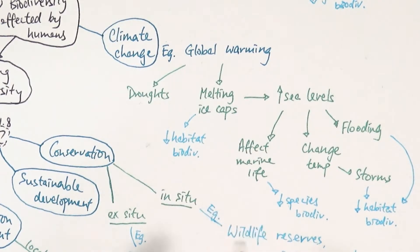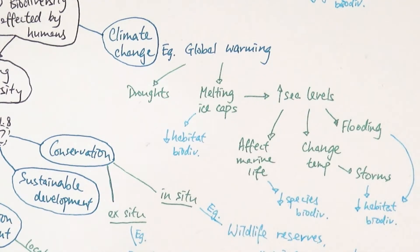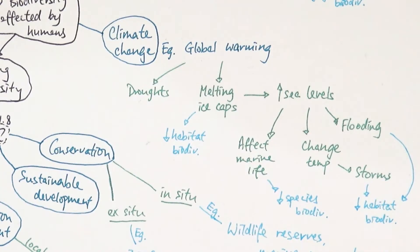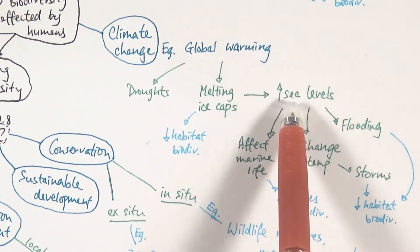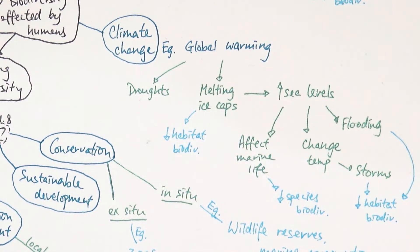Rising sea levels can affect marine life, leading to a decrease in species biodiversity. They can also cause temperature changes in certain parts of the sea — becoming colder due to melting ice caps or warmer due to global warming — which can create storms. The details of how temperature change leads to storms are not needed for biology, but may interest geography students. Flooding from rising sea levels can also devastate areas near the sea, destroying habitats and further impacting species biodiversity.